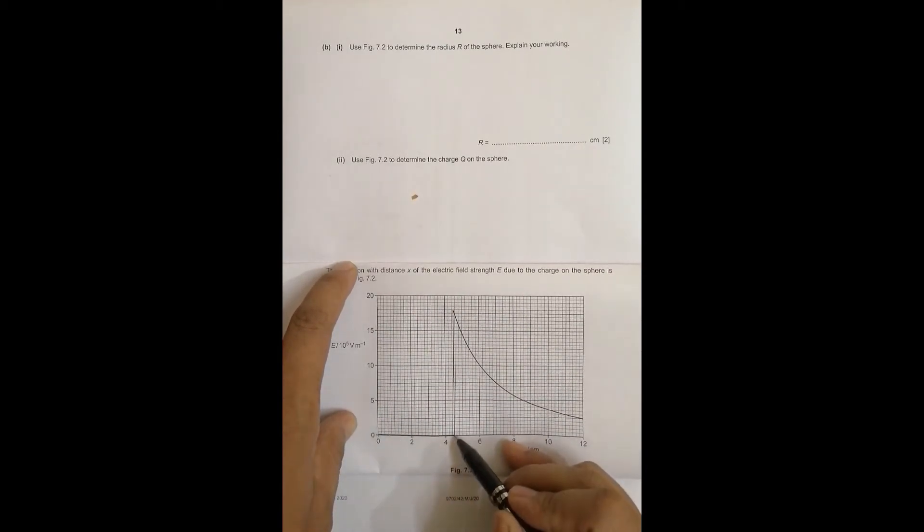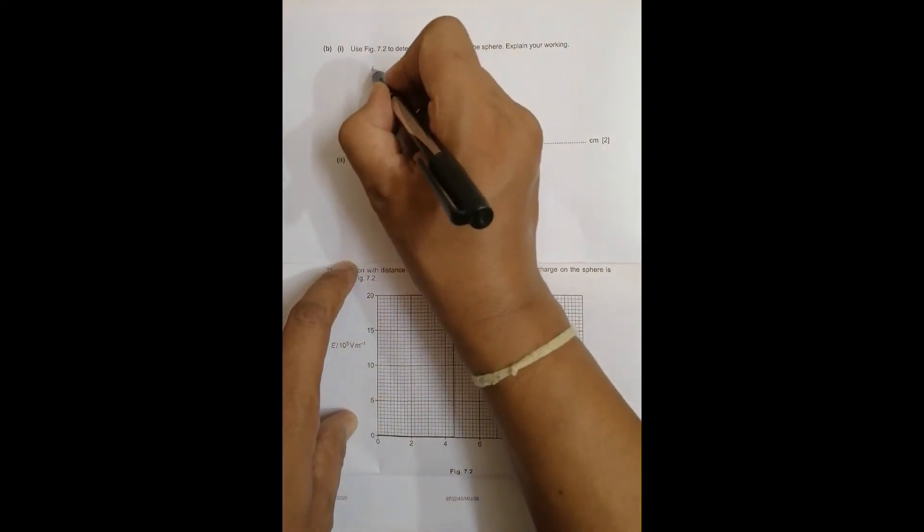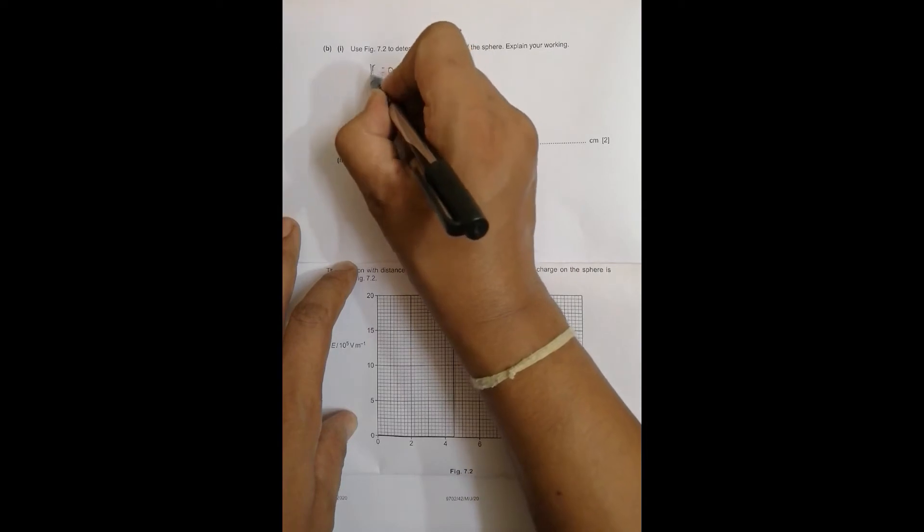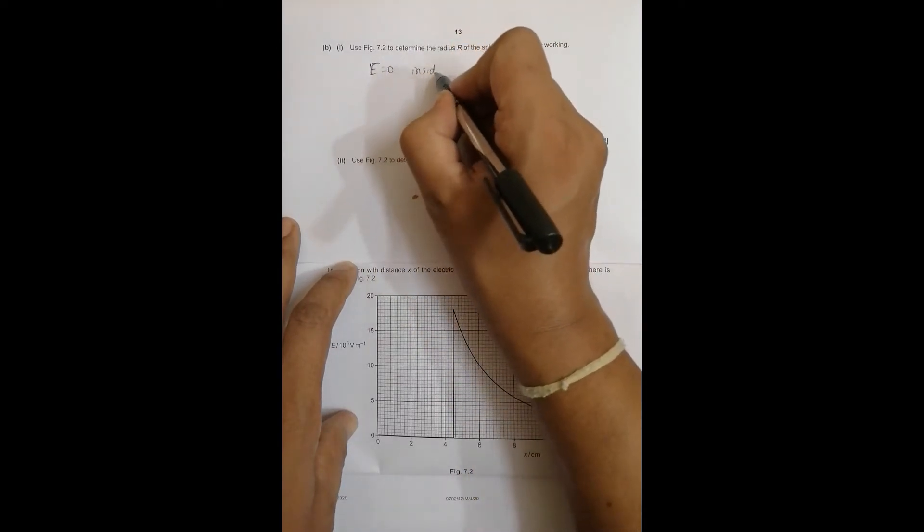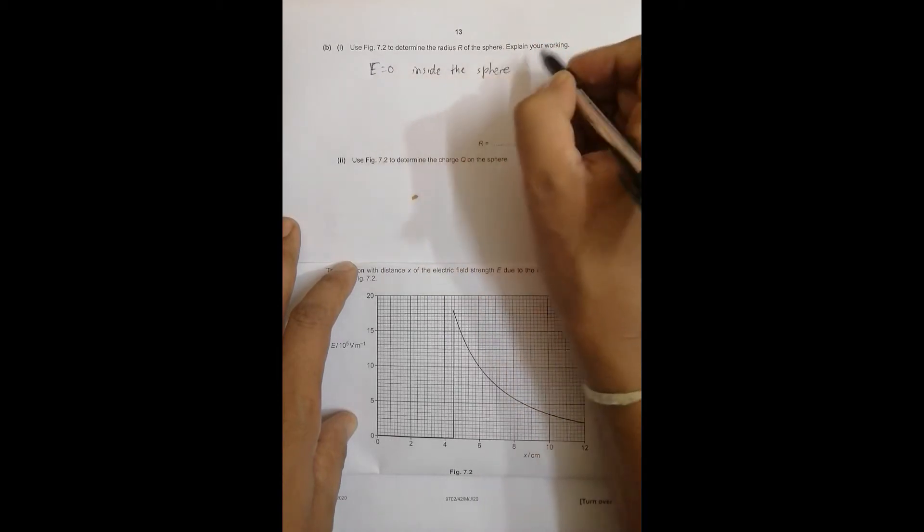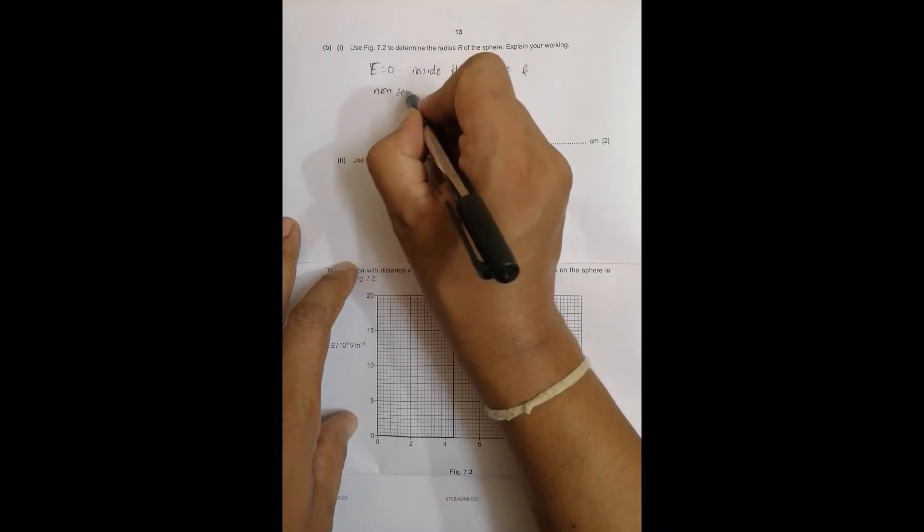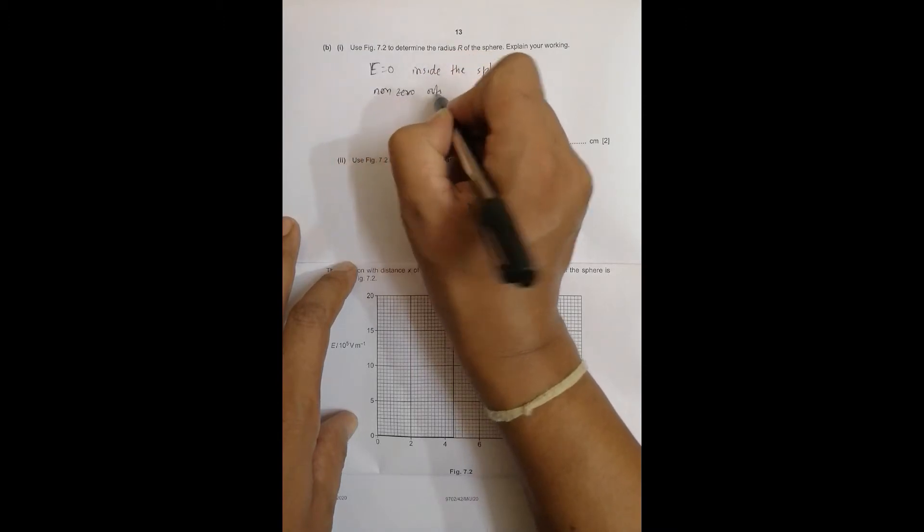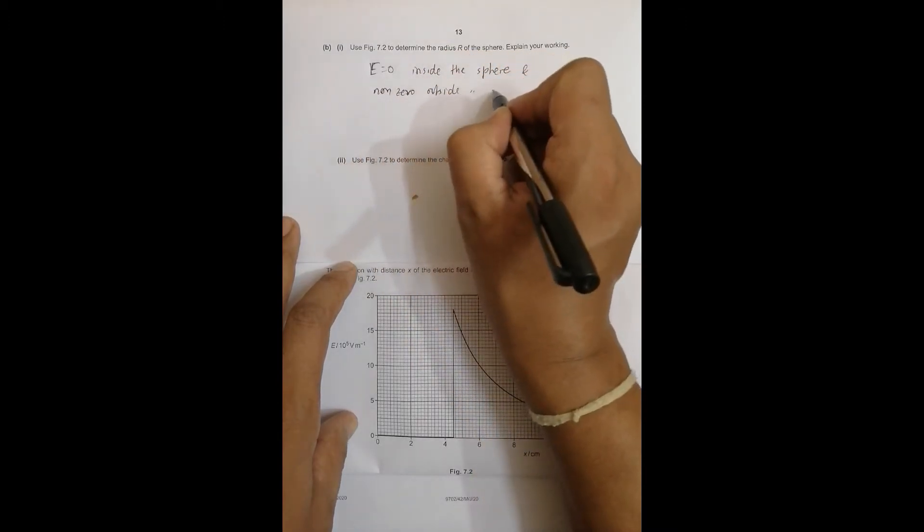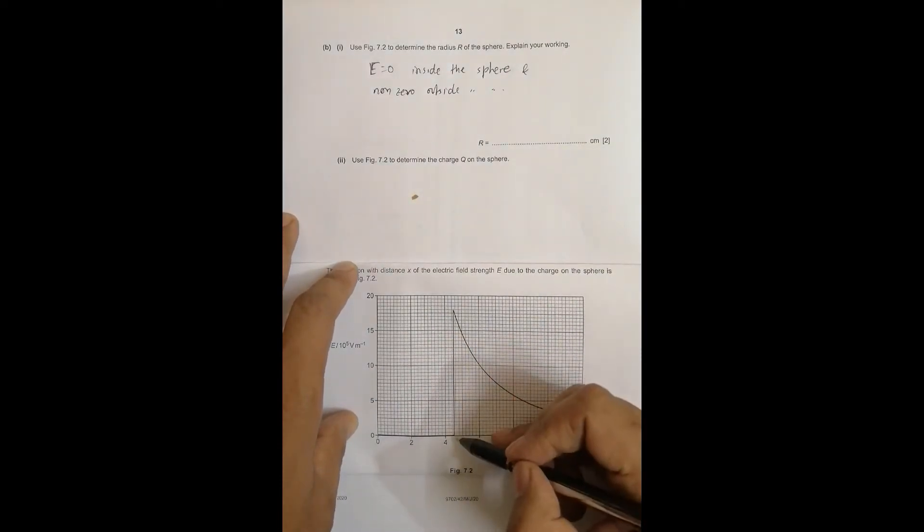From 4.5 it is outside, till 4.5 it is inside. E equal to zero inside the sphere and non-zero outside the sphere. So the boundary that acts as both of them is this distance of 4.5 centimeter.